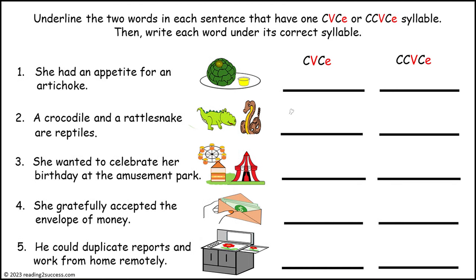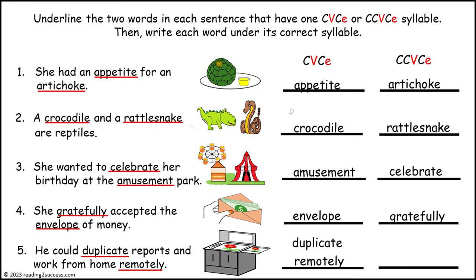Now have kids underline the words in each sentence that have a CVC silent E or CCVC silent E syllable, then write each word under its correct syllable type. This is the completed example. Sentences one, two, three, and four each have one CVC silent E word and one CCVC silent E word. However, sentence five has two CVC silent E words.